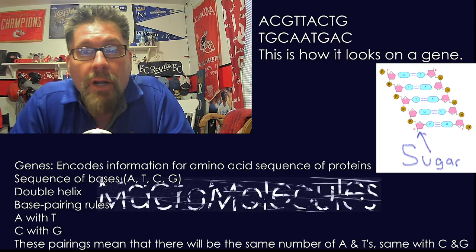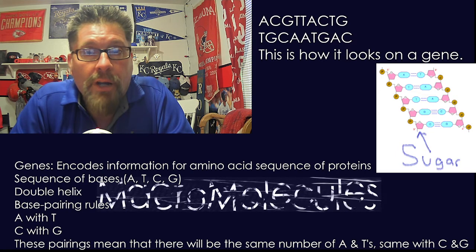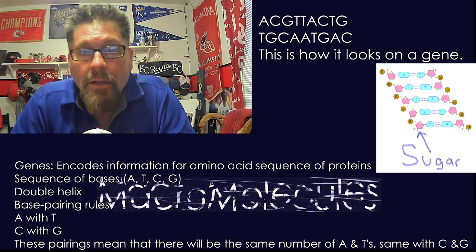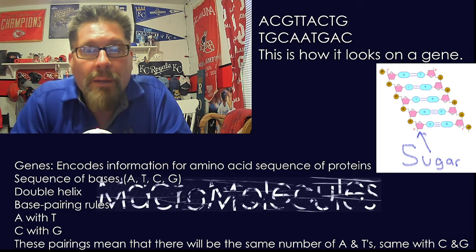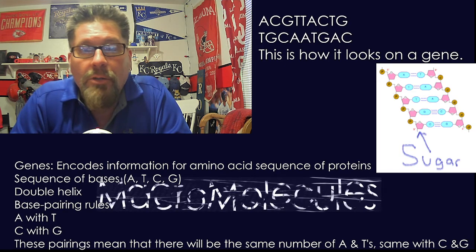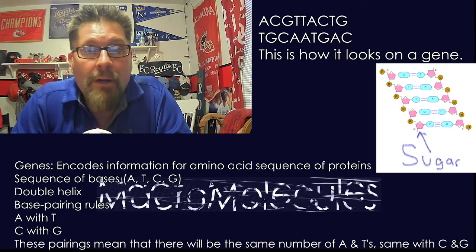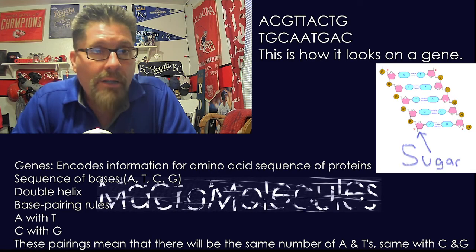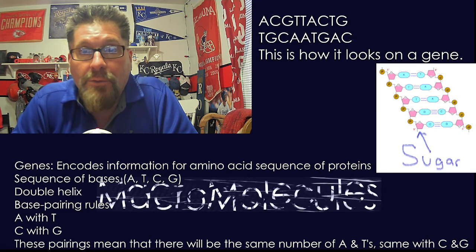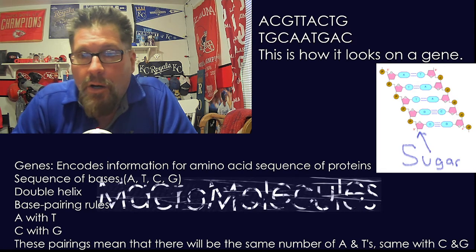DNA has some base pair rules, which refers to the nitrogen bases that are paired together. This should not be new information to you: A pairs with T, and C pairs with G. What that means is that along the two strands of a DNA molecule, A and T will appear the same number of times, and the same with C and G. So if you counted six million A's, there should be six million T's matched with it. If there were nine million C's, there should be nine million G's matched up with it.